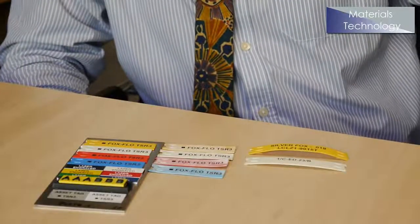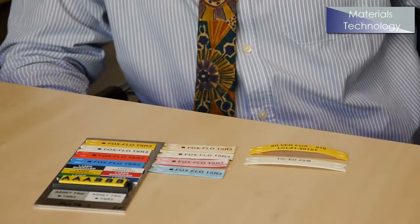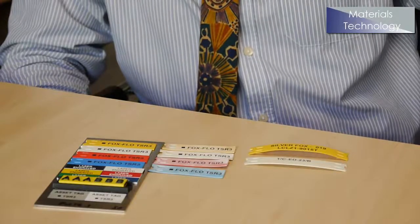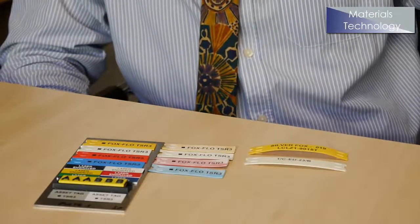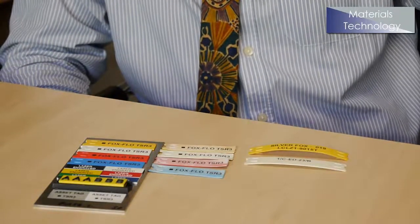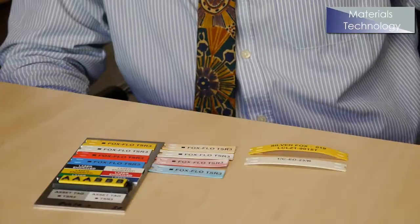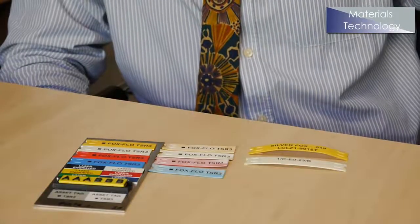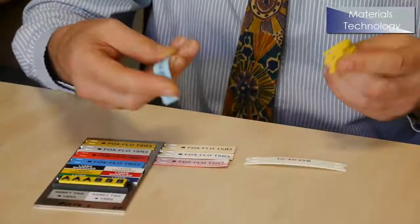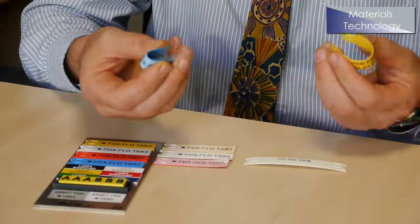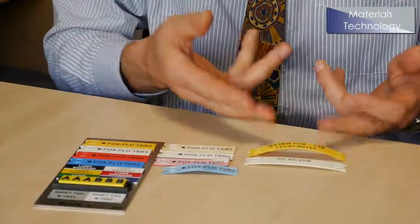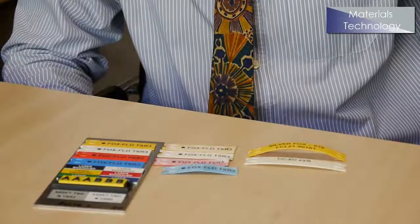One of the most impressive features of these labels was that they maintained a very high degree of their flexibility. We did some mandrel tests on completion of the UV weathering where we bent the labels around progressively finer mandrels down to a 3mm diameter mandrel and the labels survived that without cracking or splitting and you can still see that they are readily flexible. They are not quite as soft and flexible as the virgin labels here but they are still relatively flexible.